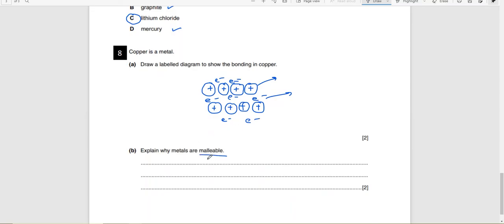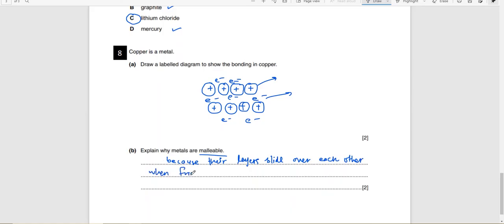Explain why metals are malleable. Answer: Their layers slide over each other when forces are applied.